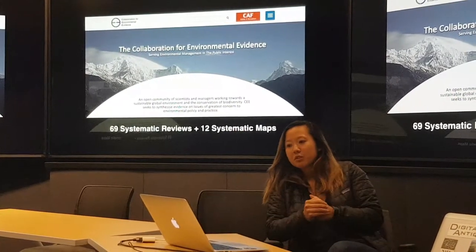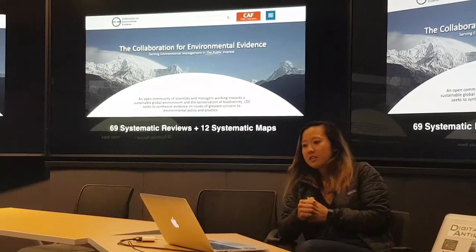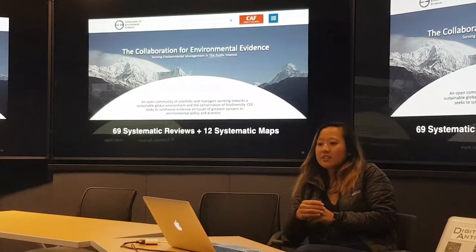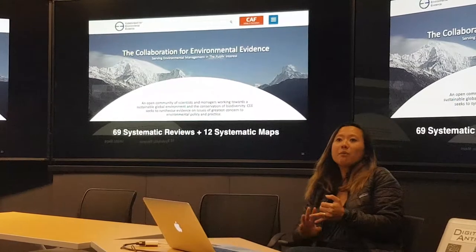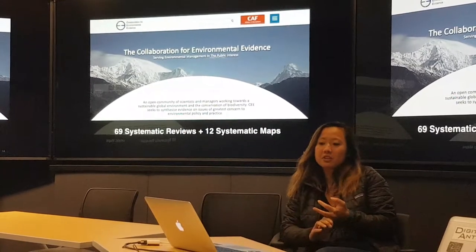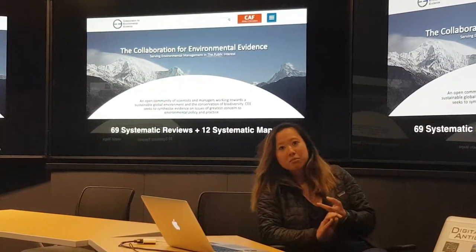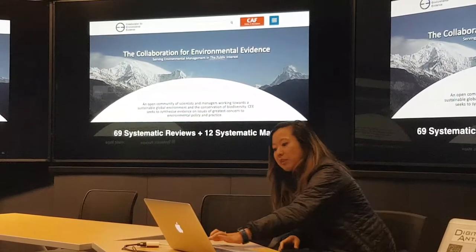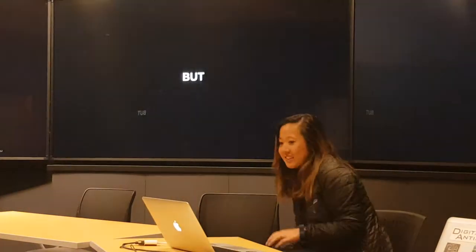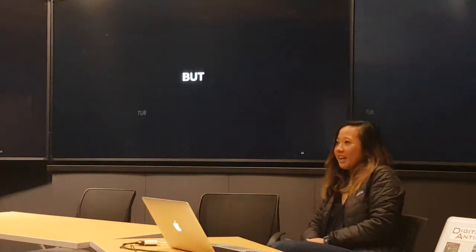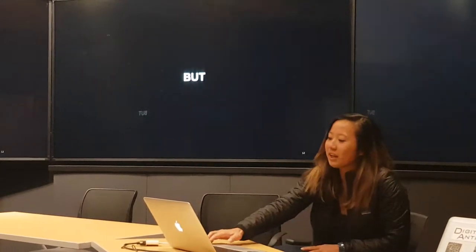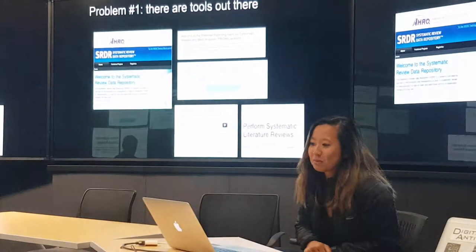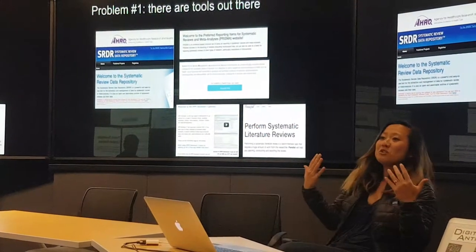There's something called the Collaboration for Environmental Evidence, of which I'm a member. It's a standard-setting community for doing this, and it also helps publish these types of reviews and evidence maps. While it's exciting to see people interested in looking at the breadth of evidence for decision-making, there are problems. First, how do you actually do that?